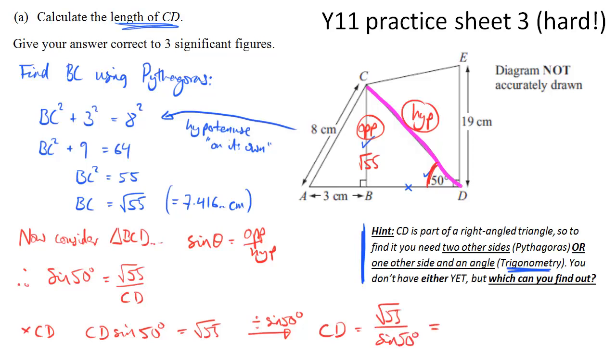You can put this into the calculator as it's written, either using the fractions button or using the divide button. And we get 9.6811 dot dot dot. And then we check. It says three significant figures. So the eight is a third sig fig and we round it as 9.68 centimetres.